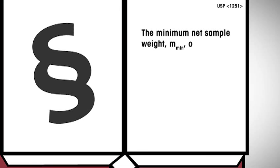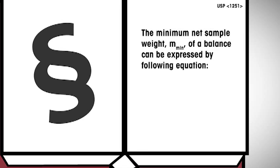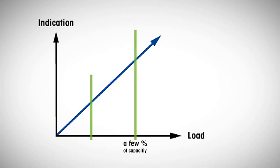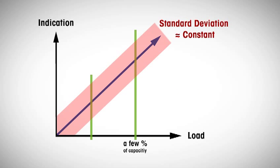The last thing you should know about the new USP weighing chapters is how to avoid weighing errors. The minimum net sample weight of a balance can be expressed by the following equation. We have already seen the Chapter 41 criteria for repeatability. Solving this equation for the mass yields that the minimum weight must be equal to or larger than 2000 times s, the standard deviation.